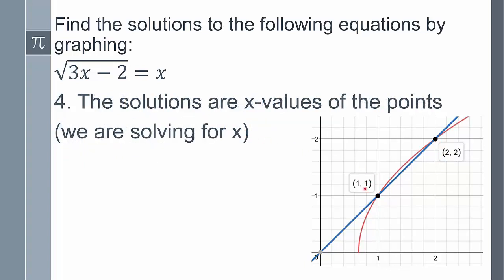The solutions are going to be those x-values, because in the original equation the only variable is x, and that's what we're looking for. So this is going to be one, and this is going to be two. Even if you replace these with y — say 3y minus 2 equals y — it's still this first value we're looking for.